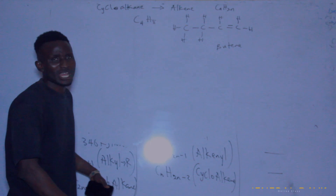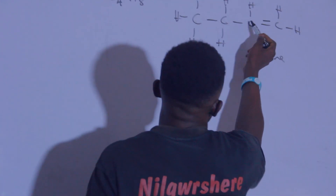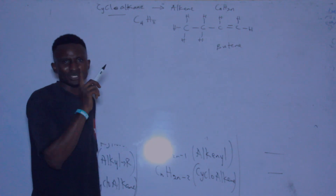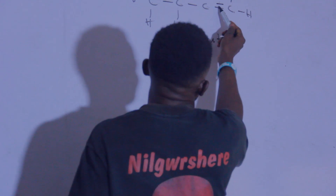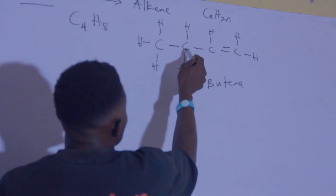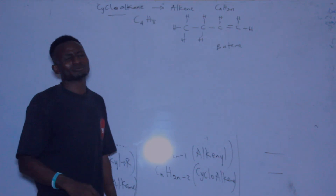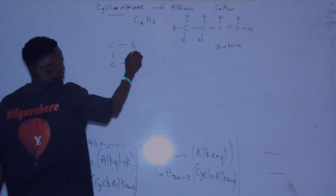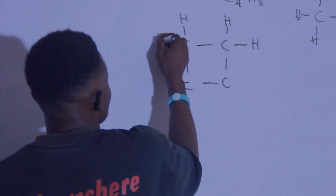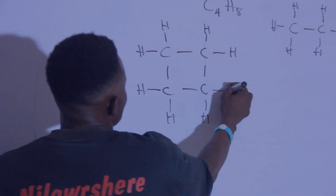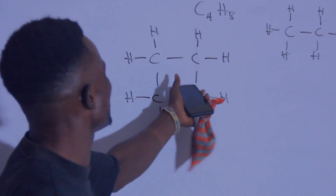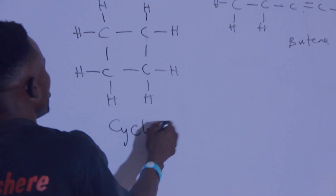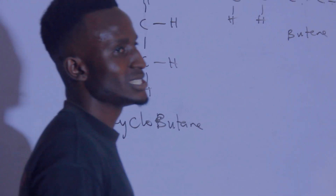C₄H₈ as a cyclic structure with no double bond — each carbon has one, two, three, four bonds — we call this cyclobutane. You cannot see the presence of a double bond here, so it is not in the alkene family, but the cycloalkane family. This is the difference between cycloalkane and alkene.